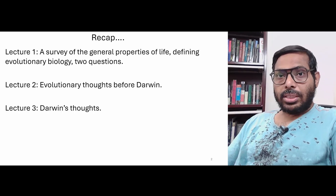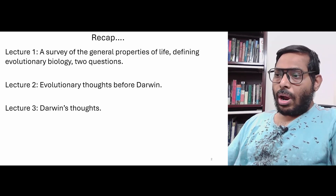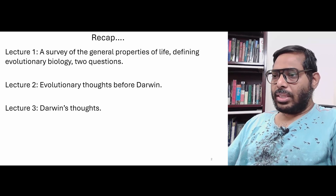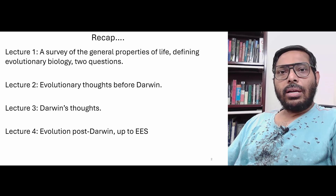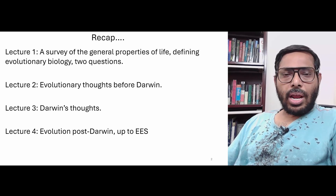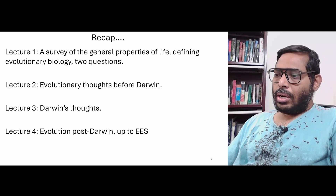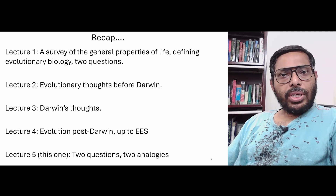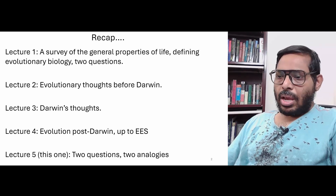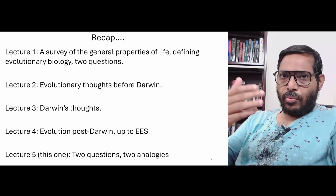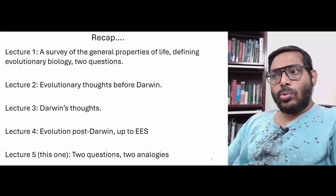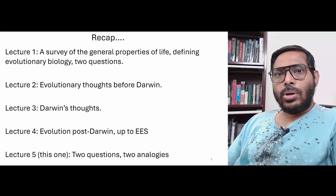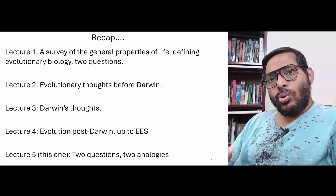In the third discussion, split over two videos, we looked at how Darwin and Wallace arrived at their thoughts and what exactly Darwin's thoughts about evolution through natural selection were. In the fourth discussion we looked at what happened in the field post-Darwin, continuing all the way till the beginning of extended evolutionary synthesis. Now in this final discussion we are going to go back to those two questions and deal with them via two different analogies.